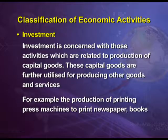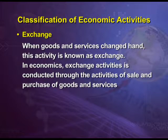For example, the production of a printing press machine — a capital good — will be utilized for the production of newspapers, books, etc. The fourth type of economic activity is exchange. When goods and services change hands, this activity is known as exchange. In economics, exchange is conducted through the activities of sale and purchase of goods and services. When producers and traders sell their goods to customers, the consumer gets goods and the seller gets money in return — this is exchange, and it is mostly done in terms of price or money.